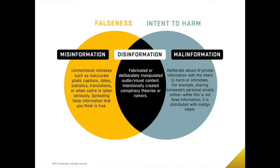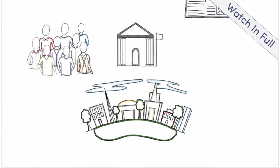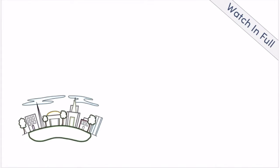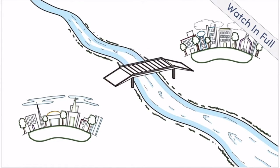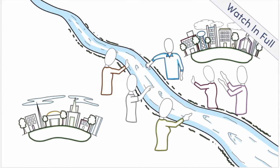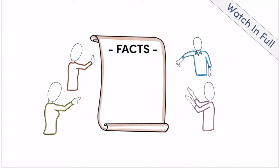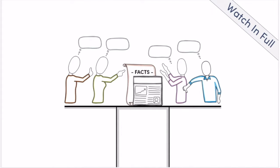For example, sharing someone's personal emails online. While this is not false information, it is distributed with malign intent. Imagine a small village called Fernville that has residents, a government, and a newspaper. For generations, the newspaper was a trusted source of information. At the edge of town, a river separates Fernville from Treetown, the next town over. Fernville residents wanted a bridge over the river, while Treetown residents were against it. The bridge became a subject of debate, and a decision needed to be made about building it. Normally, this kind of decision would be based on a shared understanding of the facts, like construction costs and timelines published in the paper.